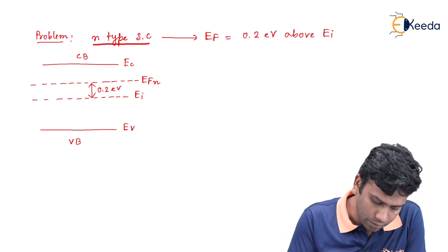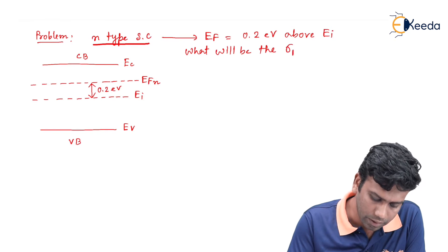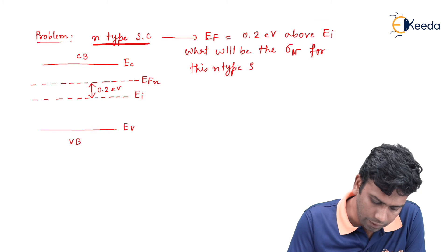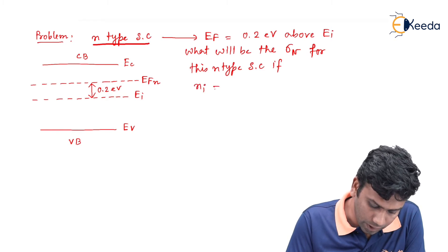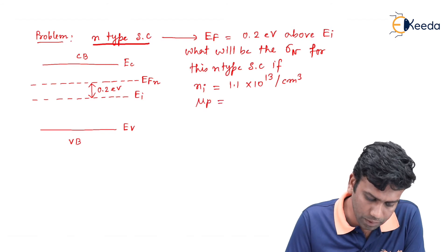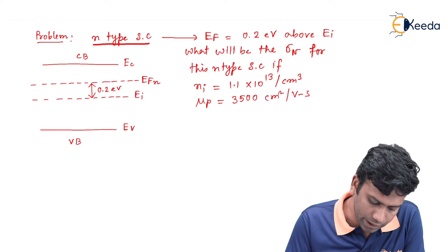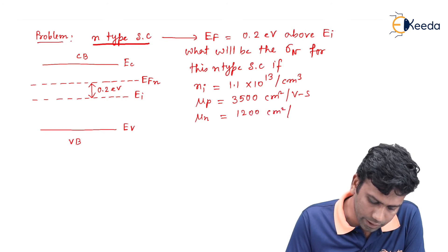Now, what will be the conductivity value, that is sigma n, for this n-type semiconductor? If the intrinsic carrier concentration of this semiconductor is 1.1 into 10 to the power 13 per centimeter cube, and mu p value, that is the mobility of the hole, is 3500 centimeter square per volt second, and the mobility value of the electron mu n is 1200 centimeter square per volt second.